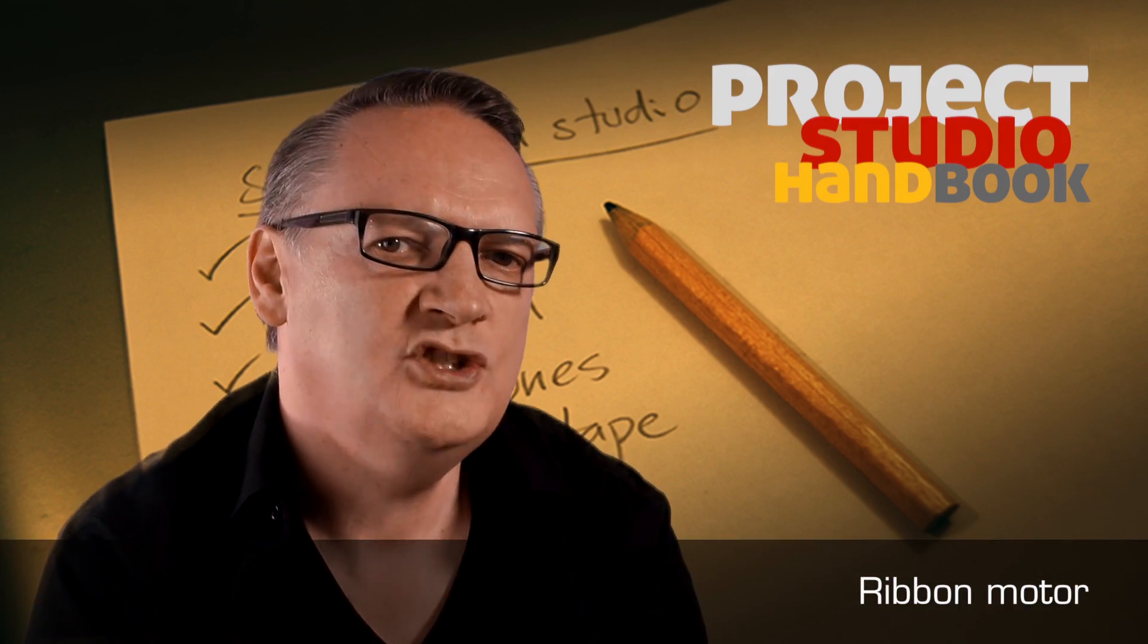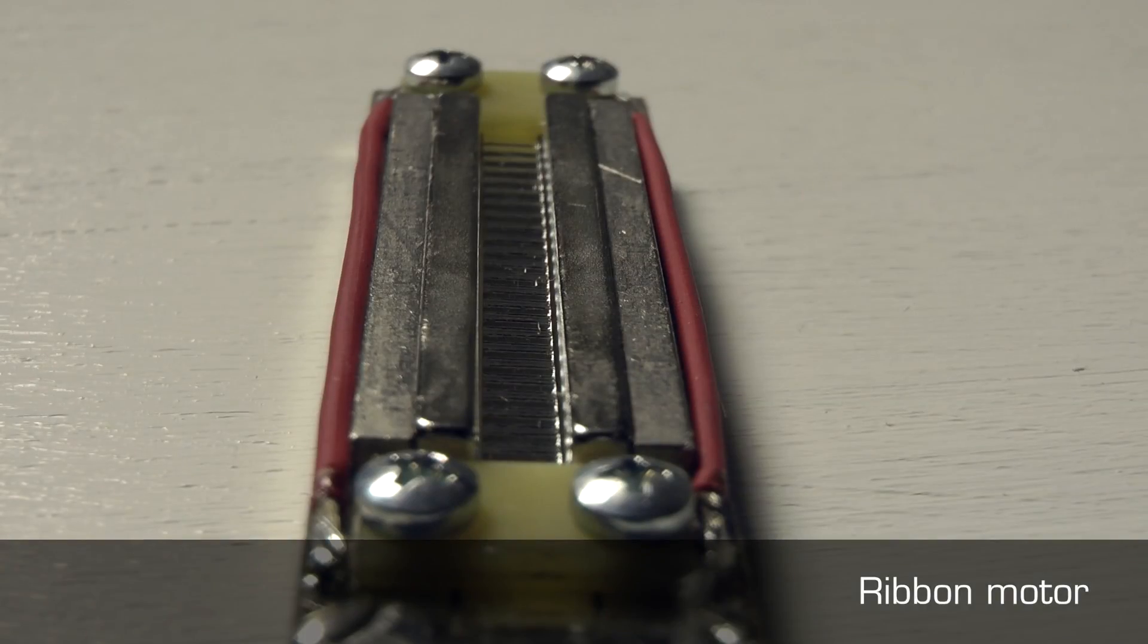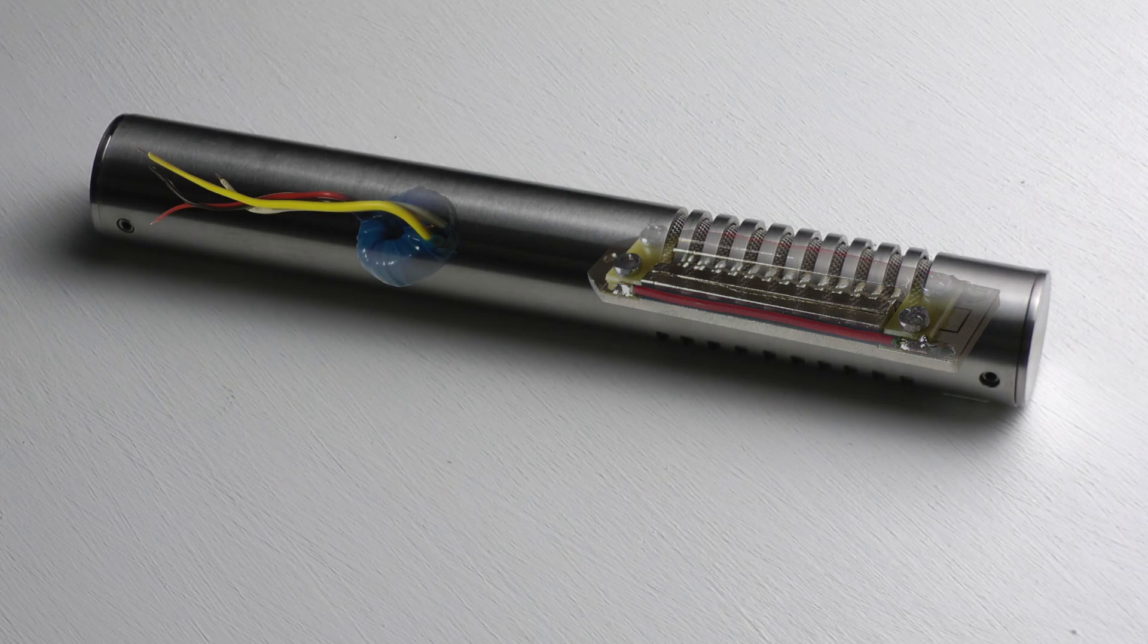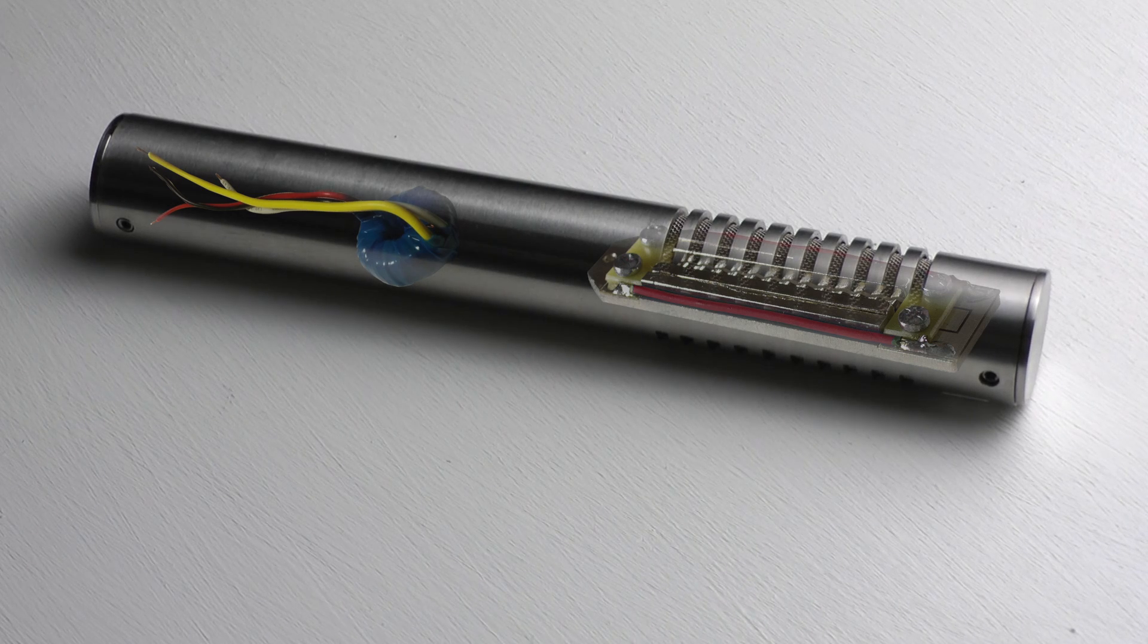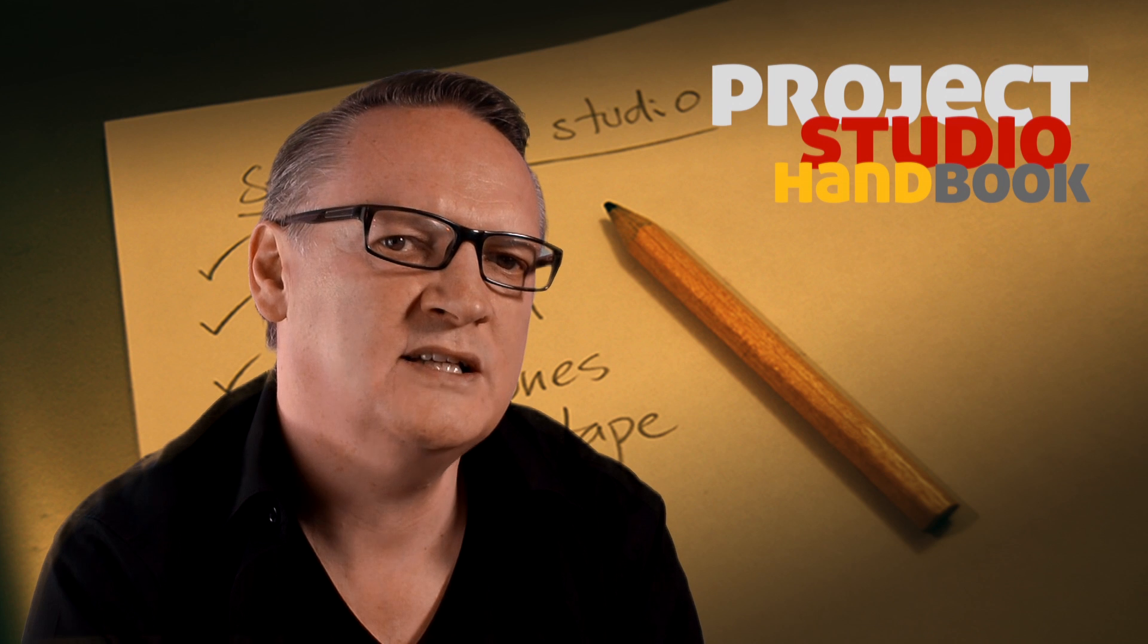The transducer within a ribbon microphone is called a motor. Ribbon motors do not necessarily require any electronics except for a transformer to boost the quiet output from the transducer to a usable mic level signal. Ribbon microphones are covered in detail in a separate video tutorial.